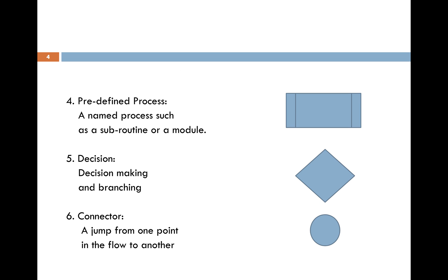Symbol four is the predefined process, representing a named subroutine — we'll look at that in future sessions. Symbol five is very important: decision making. In a program there might be several decisions to make. For example, if a mark is more than 70 you might get a grade A. So when a mark is entered, you check whether it's greater than 70 or not. Symbol five represents decision making and branching.